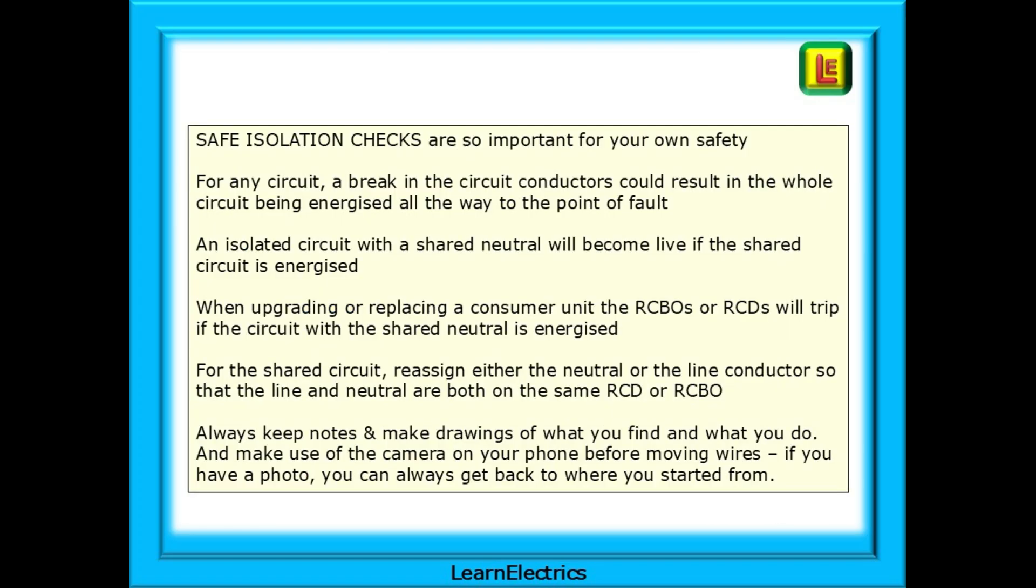A quick recap. Safe isolation checks are so important for your own safety. For any circuit, a break in the circuit conductors could result in the whole circuit being energised all the way to the point of fault. An isolated circuit with a shared neutral would become live if the shared circuit is energised. When upgrading or replacing a consumer unit, the RCBOs or RCDs would trip if the circuit with the shared neutral is energised. For the shared circuit, reassign either the neutral or the line conductor so that the line and neutral are both on the same RCD or RCBO.